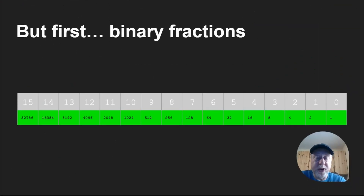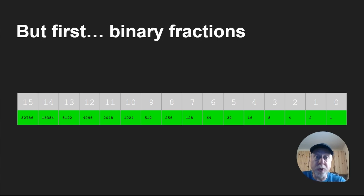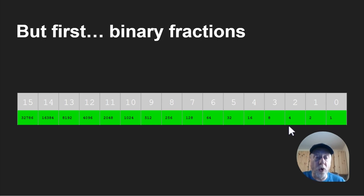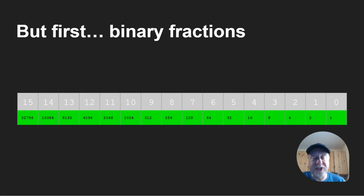Before we go further on floating point numbers, we need to mention binary fractions. You know what binary is of course — ones and zeros, base two. We normally deal in base 10 but computers deal in base two, on and off. In binary, each value is 1, 2, 4, 8, 16, 32, 64, 128, and so on, rather than units, tens, hundreds as in base 10. So for the number 17, you have one lot of 16 and then a one, which gives you 17.